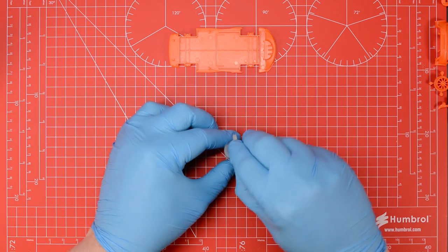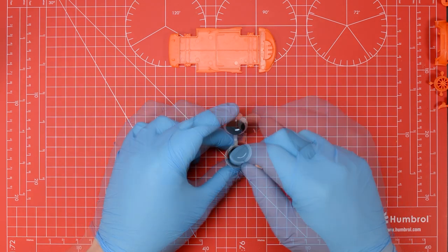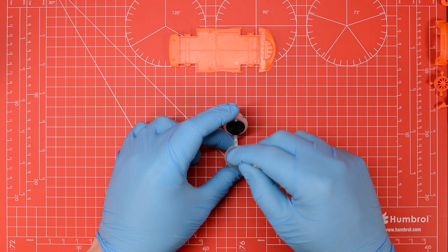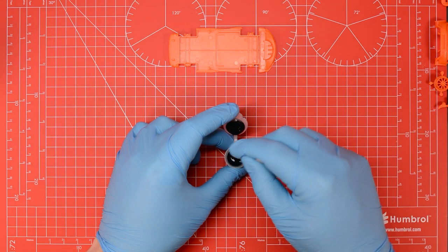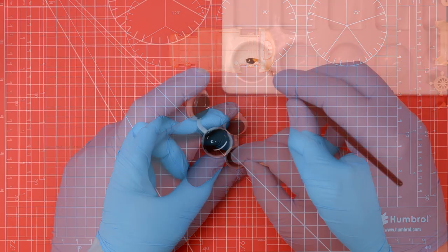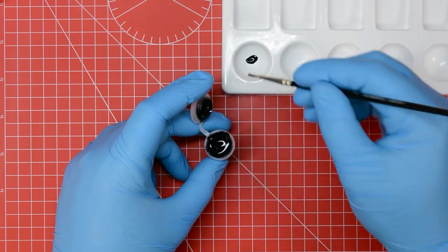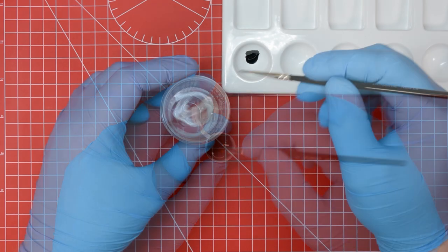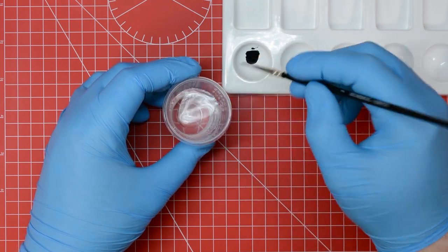We can now start painting the kit with the matte black number 33. We'll give this a good stir first to undo any separation that may have occurred while the kit was in storage, then transfer some to the palette. We can then mix in about 30% ordinary tap water.